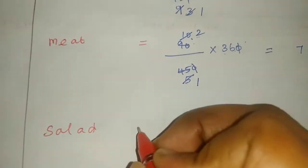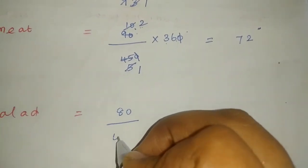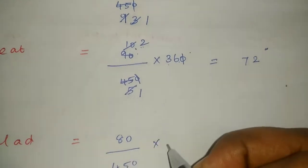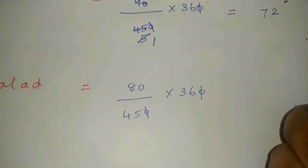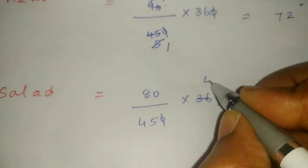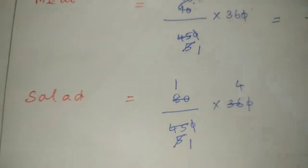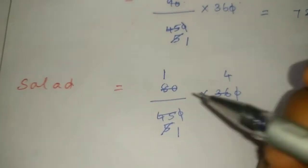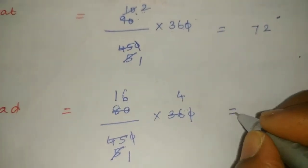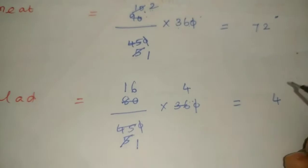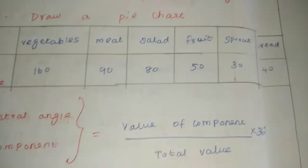Next step is Salad. The value of Salad is 80. The formula is: value of component divided by total value 450, multiplied by 360. After cancelling zeros and calculating: the degree for Salad is 64 degrees.